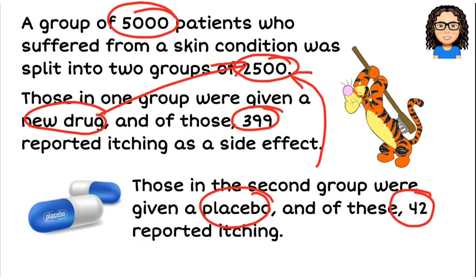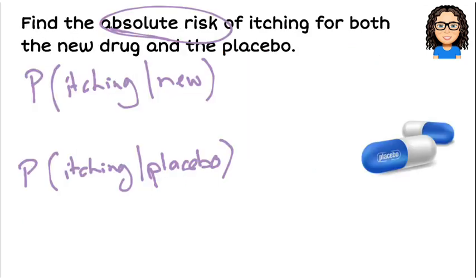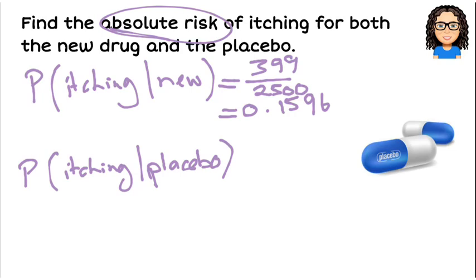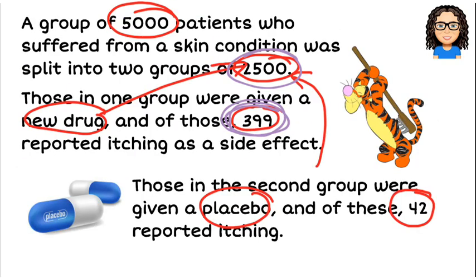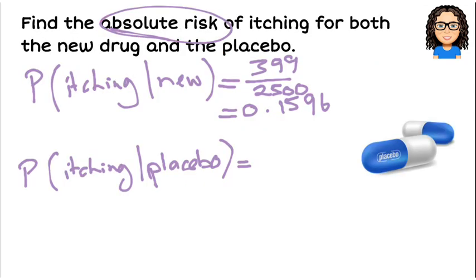For itching and the new drug: there were 399 people who itched out of the 2,500 taking the new drug, so that is 399/2500, or as a decimal 0.1596. For those that took the placebo, 42 out of 2,500 reported itching, which as a decimal is 0.0168.